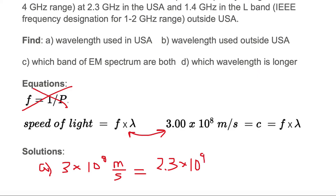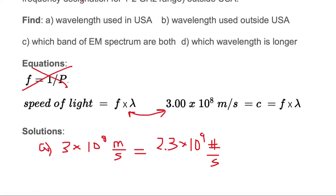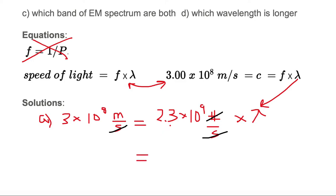Hertz is a special unit meaning number per second, so we replace it with a number symbol divided by seconds. We can see the seconds units cancel on both sides, and the number placeholder also cancels, leaving us with units of meters. We have 3 times 10 to the 8th divided by 2.3 times 10 to the 9th times wavelength, so we divide both sides by 2.3 times 10 to the 9th to isolate wavelength, giving us 3 times 10 to the 8th divided by 2.3 times 10 to the 9th.